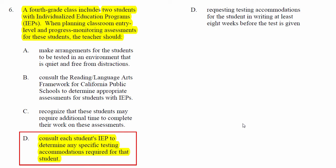Read it and see if there are any specific testing accommodations — more time, fewer distractions, whatever it says — that have to be followed. Looking at the option 'make arrangements for the students to be tested in an environment that is quiet and free from distractions' — that should probably be done for the whole class, and unless it's specified in the IEP, you can't just do what you want. 'Consulting the reading language arts framework' — no, you have to follow the IEP and consult with whoever's in charge of those IEPs.